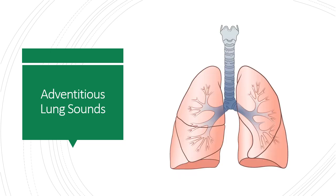Adventitious lung sounds are considered abnormal; however, they may be a normal finding for the patient with chronic disease. Stridor is a high-pitched inspiratory sound of the upper airway caused by airway obstruction, glottic edema, trauma, or spasms. It's found in croup, epiglottitis, laryngitis, allergic reactions, foreign body airway obstruction, and vocal cord injuries.